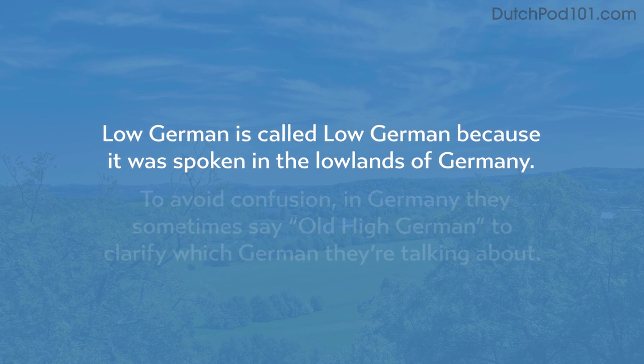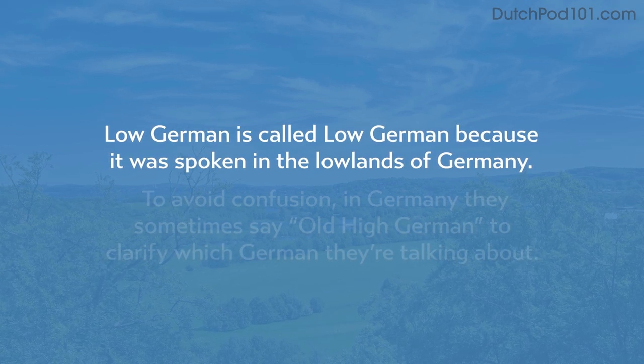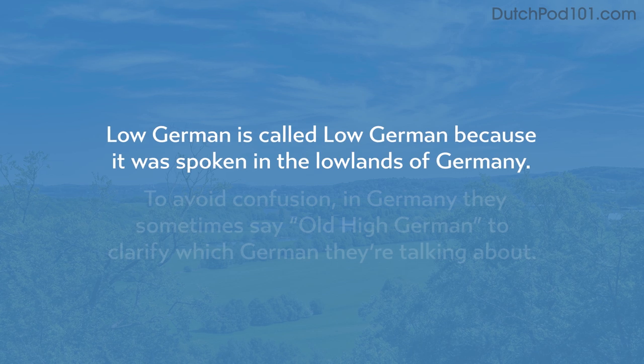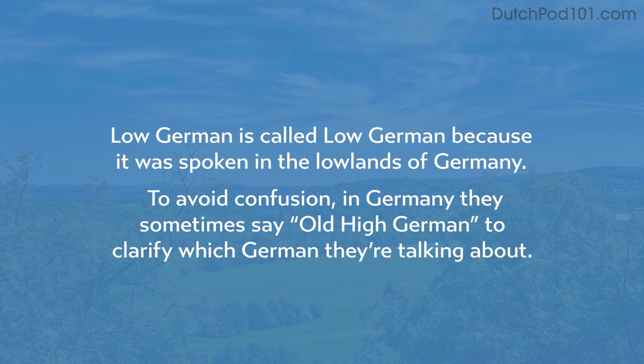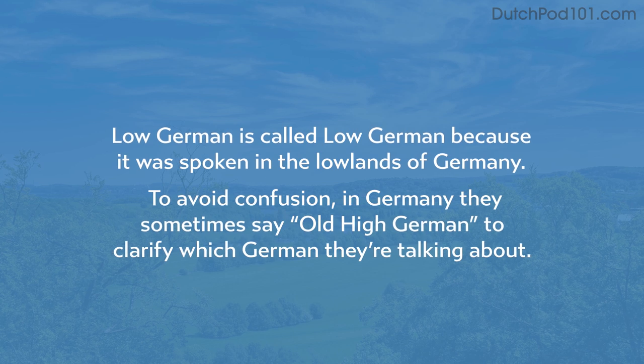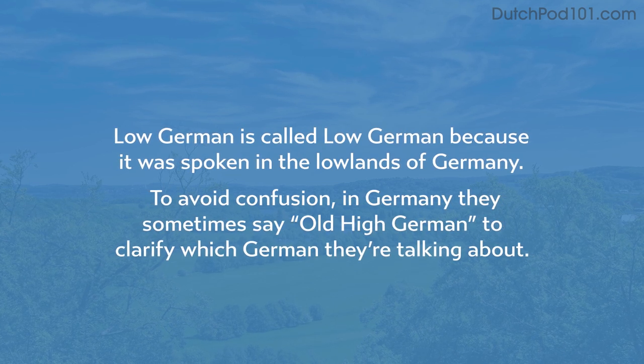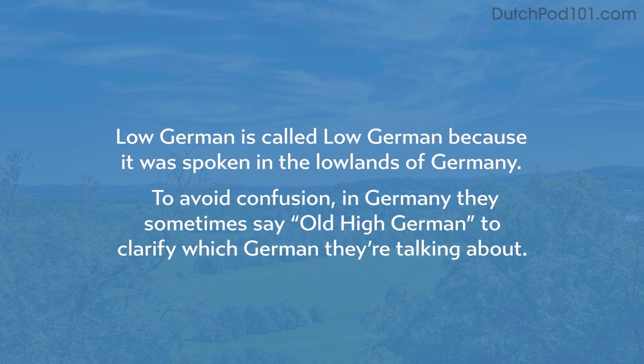Low German is called low German because it was spoken in the lowlands of Germany. In Germany they sometimes say old high German to clarify which German they're talking about. Alright, the consonant shift takes place in four phases, and another three shifts happen which officially aren't categorized. Let's walk through them.